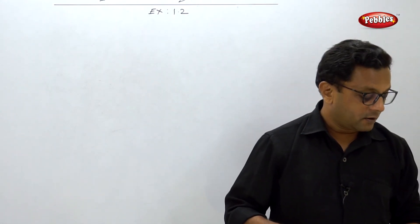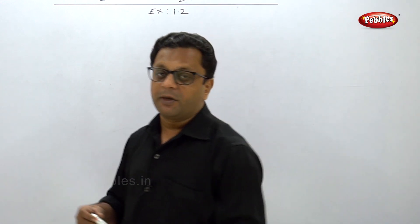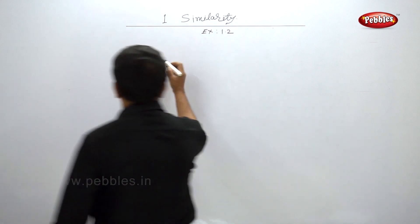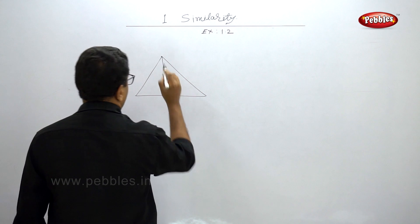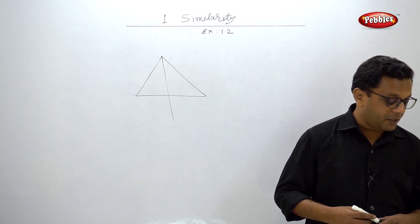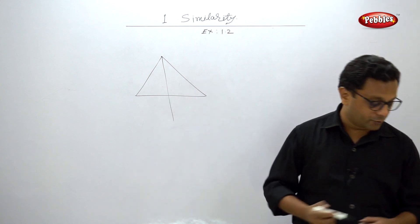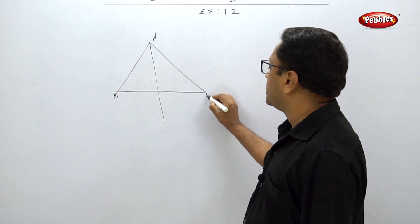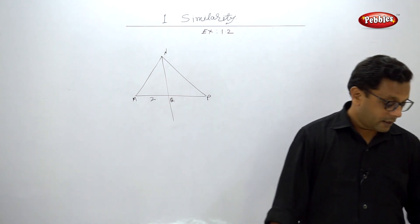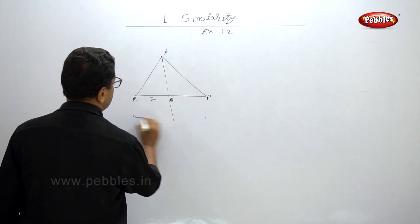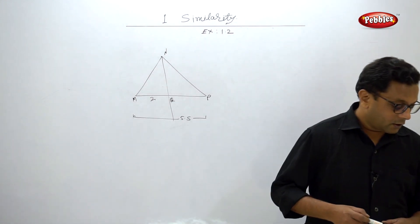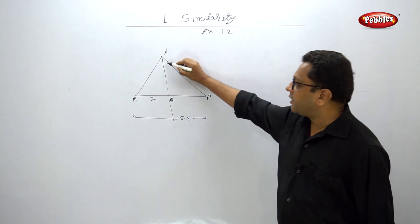Examples 3, 4, and 5 are directly based on the angle bisector property of a triangle. In Example 3, triangle MNP is given with point Q on side MP. MQ is 2, MP is 5.5, and the ray NQ is the bisector of angle MNP.